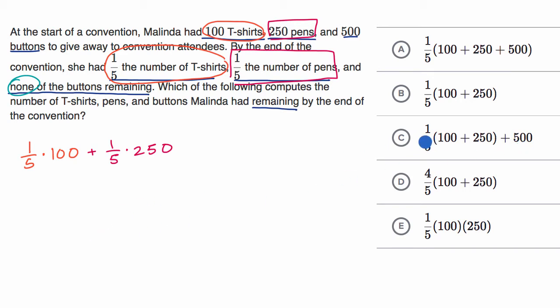So one way to think about it is we could either take these expressions and distribute the one-fifth, or we could try to factor out the one-fifth here to make this look more like one of these choices. So let's do that.